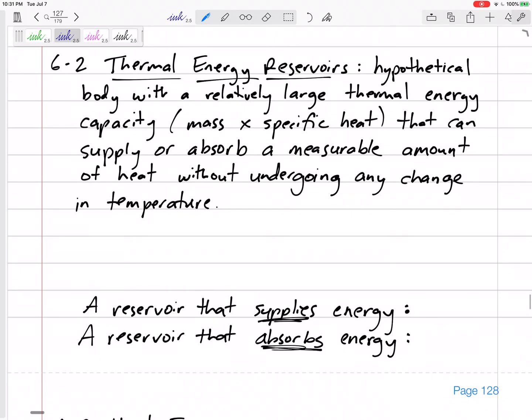So thermal energy reservoirs that can accept and give heat without undergoing any change in temperature. A thermal energy reservoir, here's the definition: a hypothetical body with a relatively large thermal energy capacity, so either a large mass or a large specific heat or both, kind of multiplied together, that can supply or absorb a good amount of heat, a measurable amount of heat, without undergoing any change in temperature like an ocean, like a river, a lake, the atmosphere.